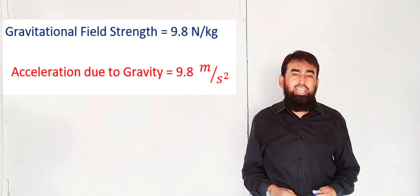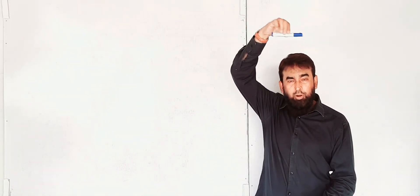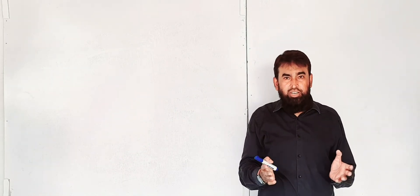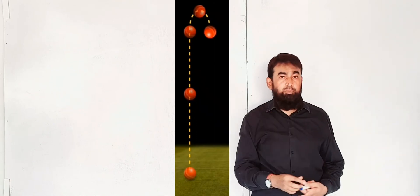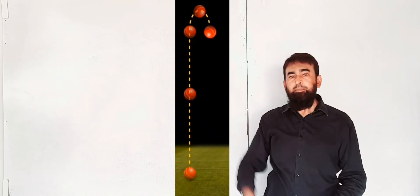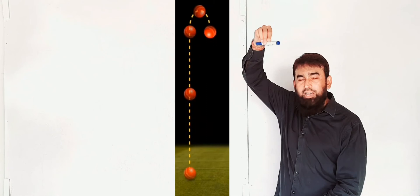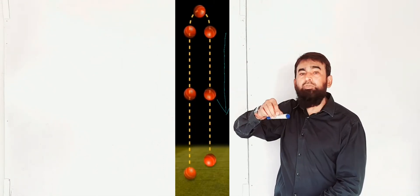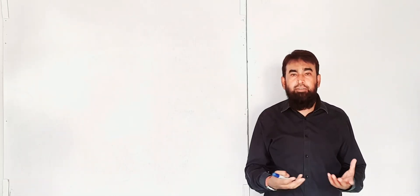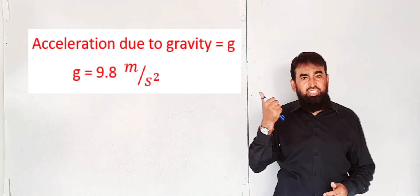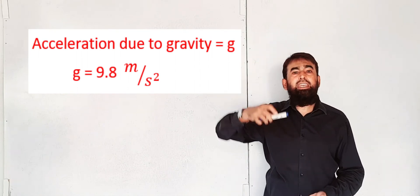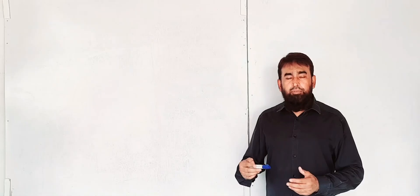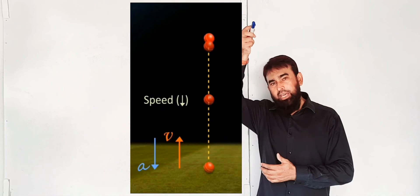When a body is falling from a certain height towards the earth, its gravitational acceleration is considered as positive acceleration because velocity gradually increases as it comes towards the surface of the earth. When you drop a body from a certain height, it travels towards the surface of the earth and its velocity increases gradually — that is why its acceleration is positive. It is represented by small g, which represents gravitational acceleration or acceleration due to gravity, equal to 9.8 meter per second square.